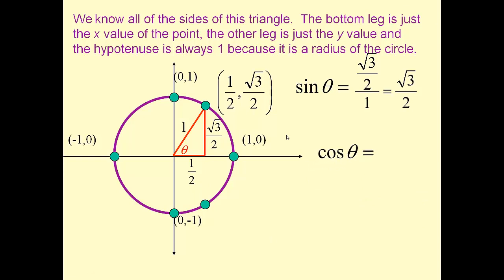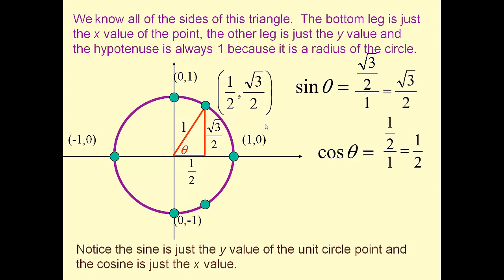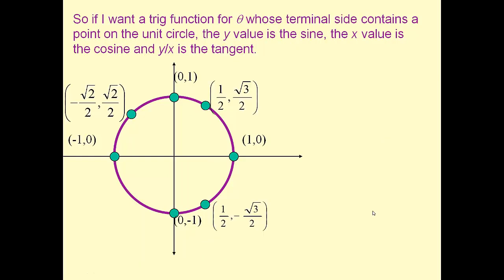Similarly, the cosine, adjacent over hypotenuse, is going to be 1/2 over 1 or 1/2. Notice, because that hypotenuse is 1, the sine winds up being the y coordinate and the cosine winds up being the x coordinate. Now if we talk about the tangent, you'll recall that the tangent is opposite over adjacent. So that's the square root of 3 over 2 divided by 1/2. What happens here is we get the square root of 3. So the tangent of that angle is the square root of 3.